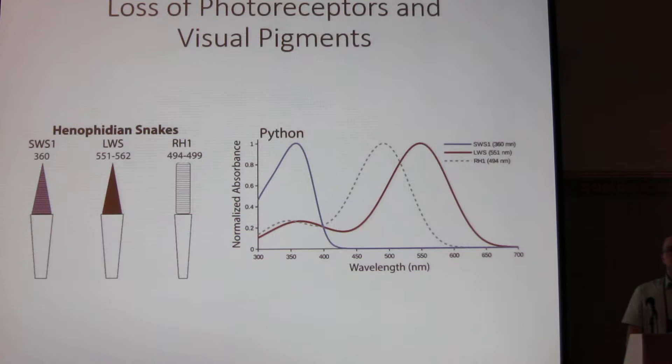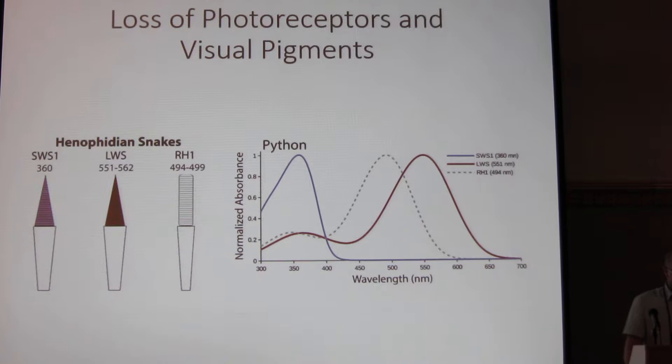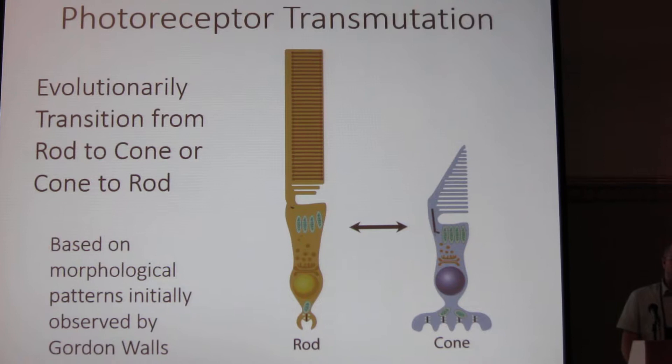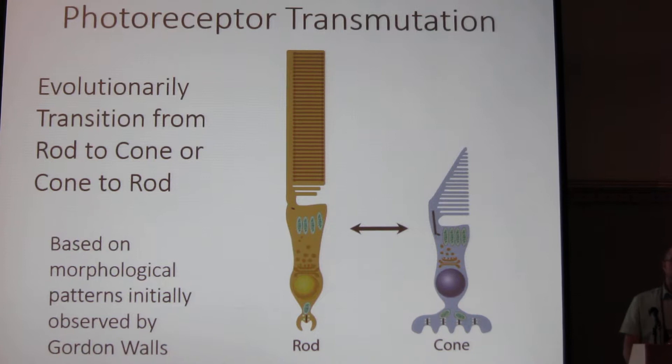These two groups, the snakes and geckos, also happen to be the two groups that we have the most evidence for photoreceptor transmutation. So what exactly is this? It's simply the transition of a rod into a cone, and this was observed based on morphological patterns, initially observed by the comparative ophthalmologist Gordon Walls. Now this might seem like a very simple process, but when you take into account all the multitude of molecular mechanisms involved, it actually can become quite complicated.